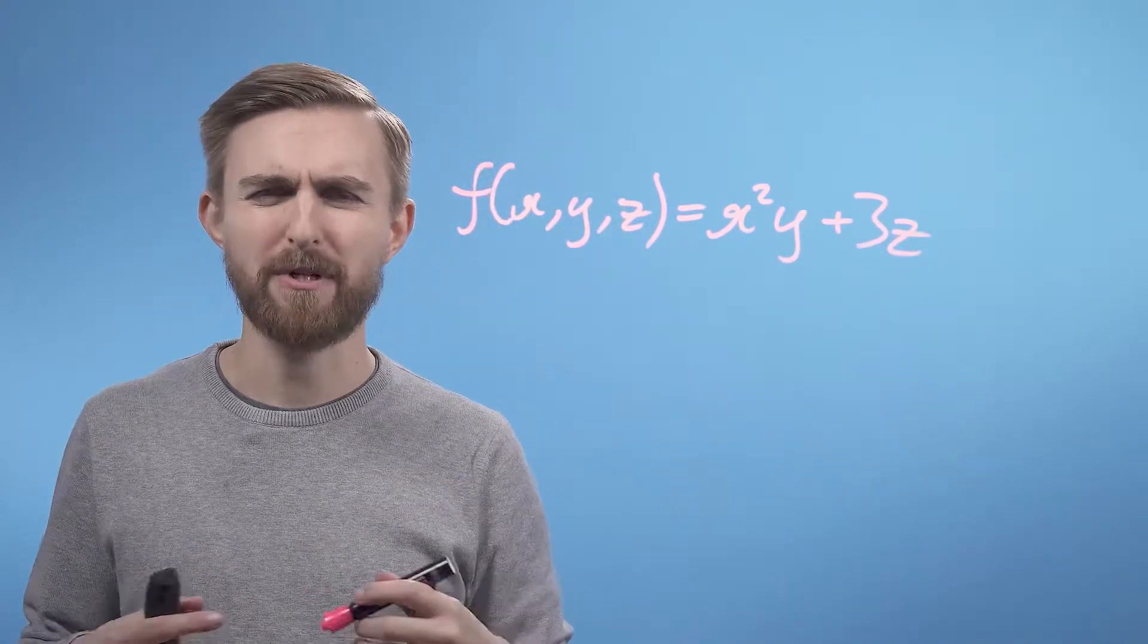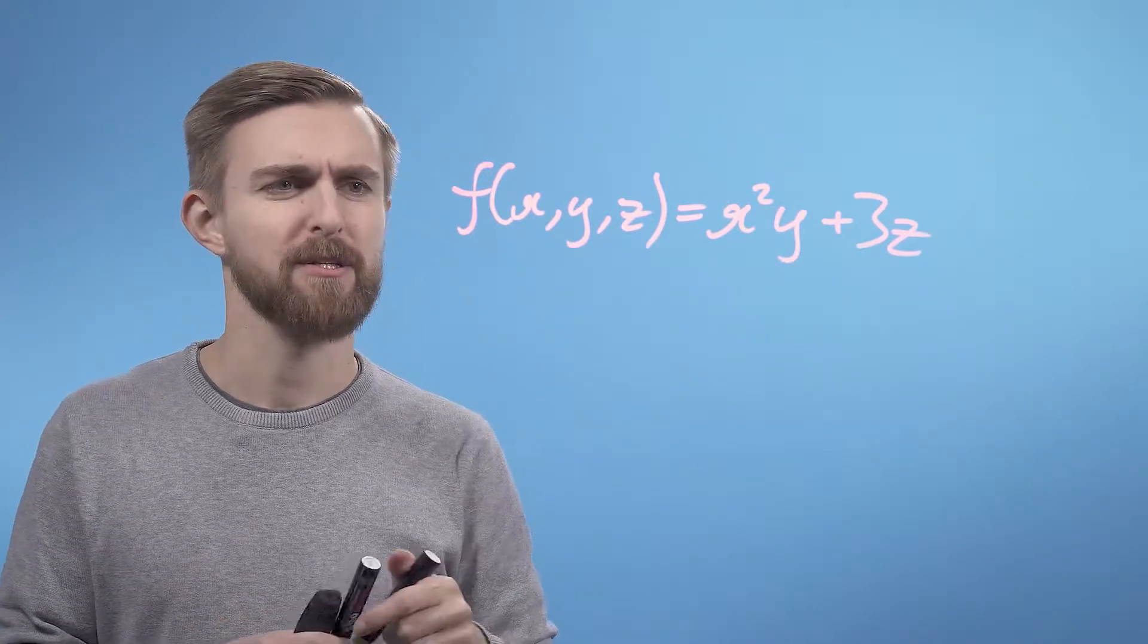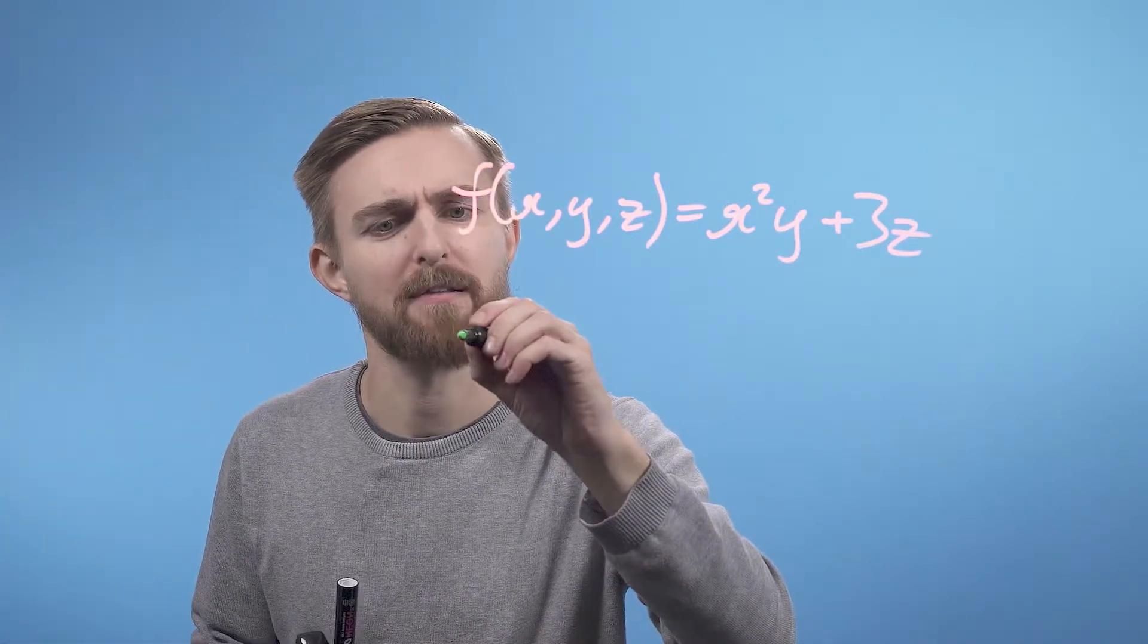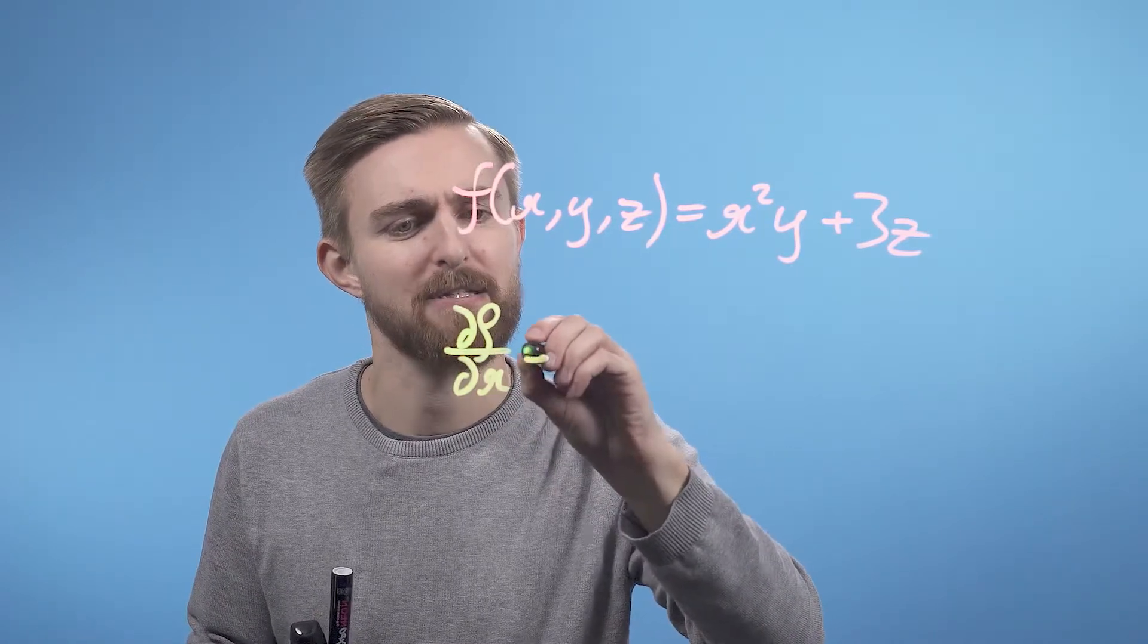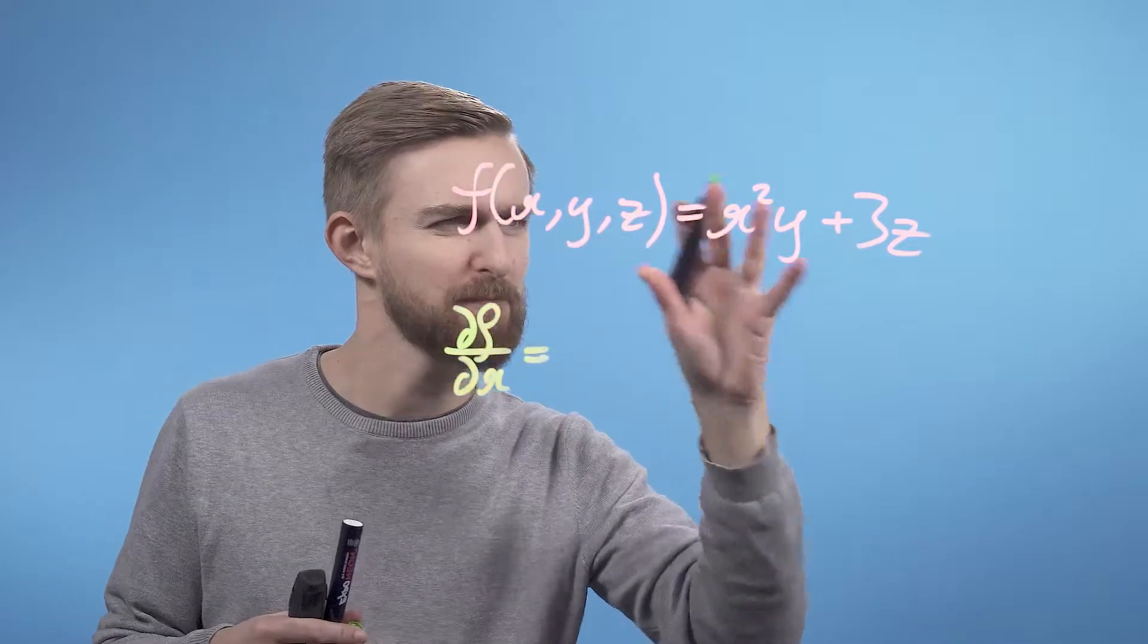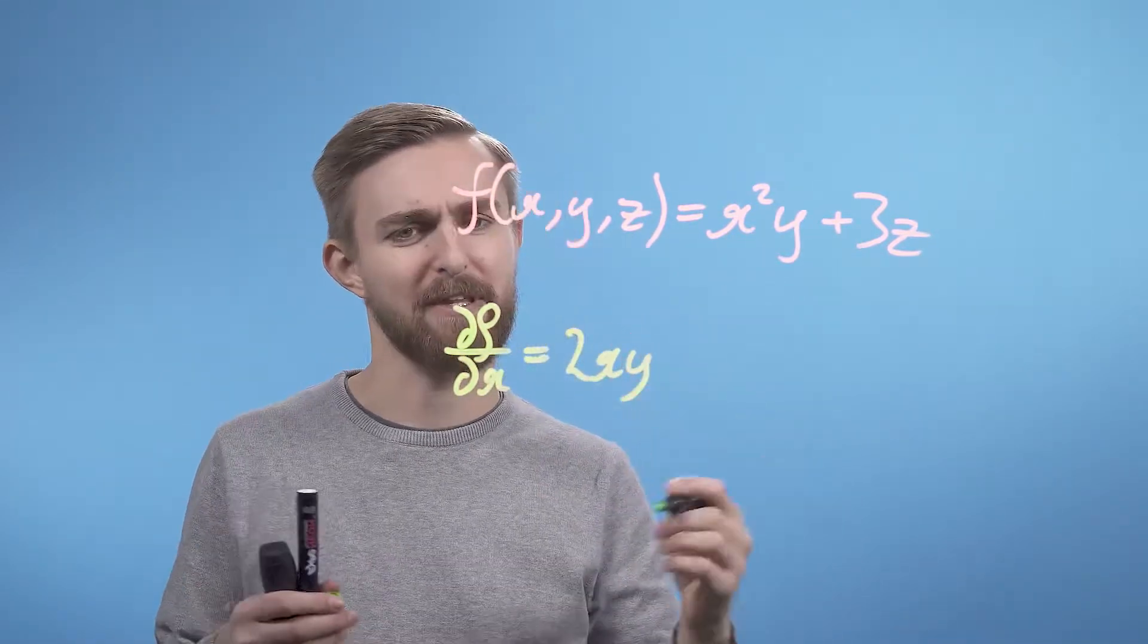To build the Jacobian, we just find each of the partial derivatives of the function one by one. So df/dx is going to equal 2xy when we treat everything else as constants.